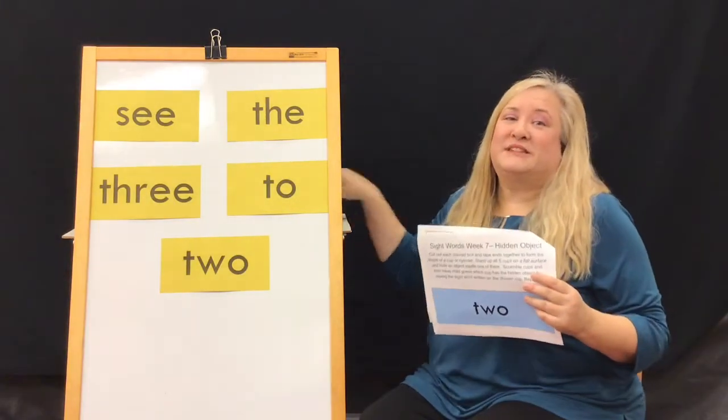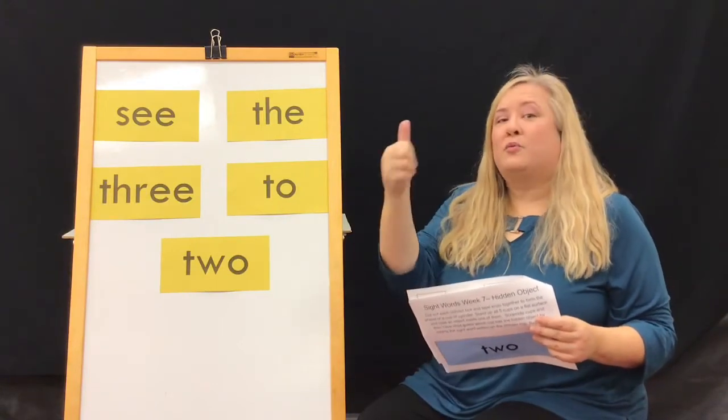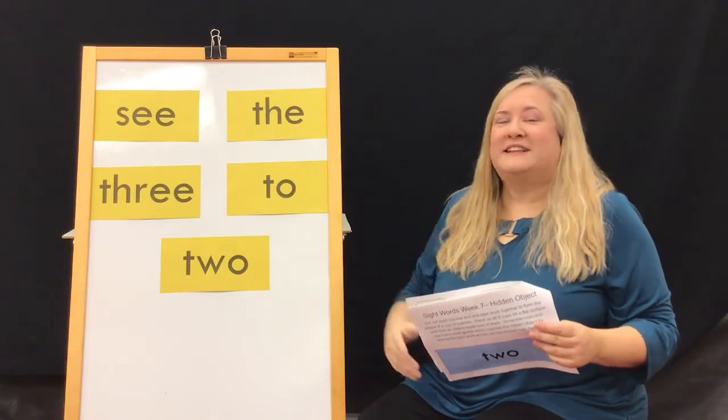We're going to practice our sight words today using the five practices of early literacy: read, play, write, talk, and sing. Let's get started.